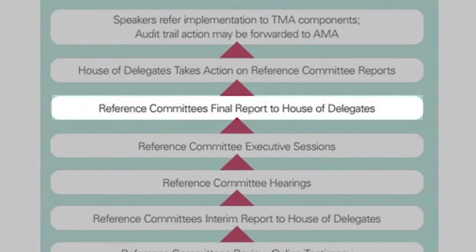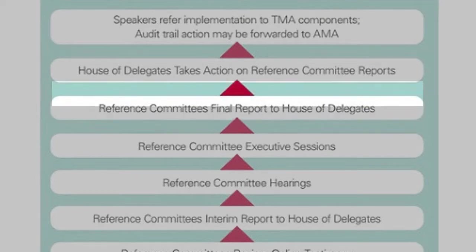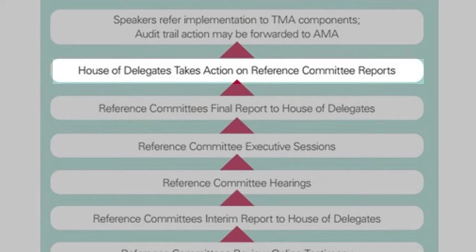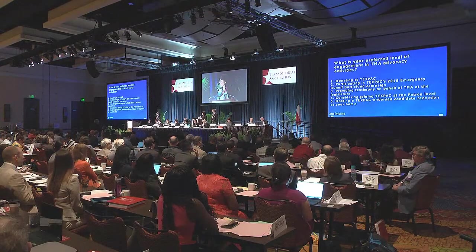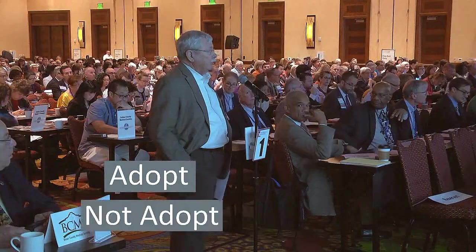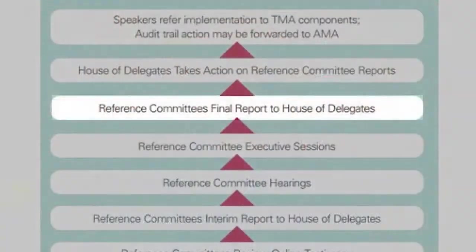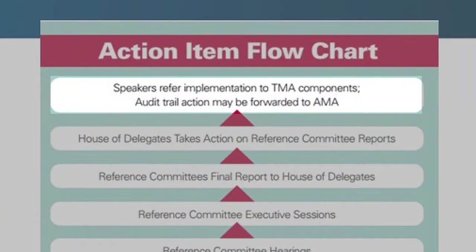The House of Delegates then hears the reference committee reports. As each report is presented, delegates have an opportunity to extract any item they wish to debate. An item must be extracted to debate. After extraction, the House approves the remainder of the reference committee report on a consent calendar. The House then debates extracted items in the order that they appear on the reference committee report and votes to adopt, not adopt, refer, or amend. The speakers refer items for implementation and referred items for study to the TMA components. All actions taken by the TMA in regard to these items are recorded in the TMA audit trail.